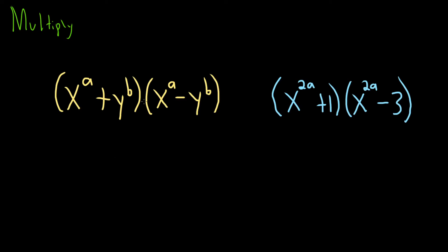In this problem we have to multiply out these polynomials. Here a and b are integers. So in the first example here on the left, we can use a familiar formula.